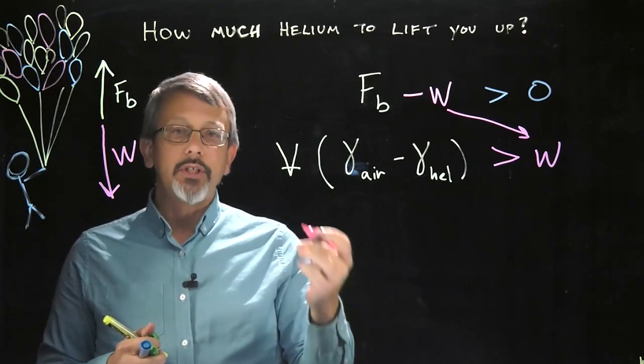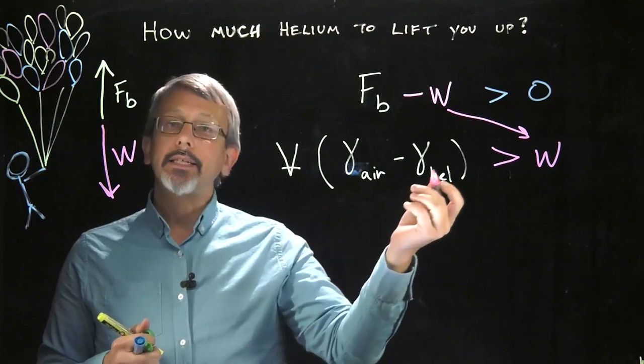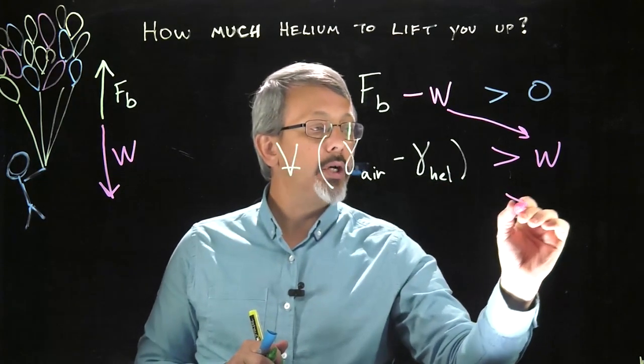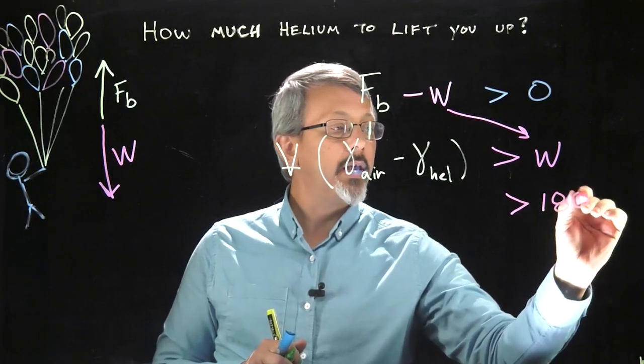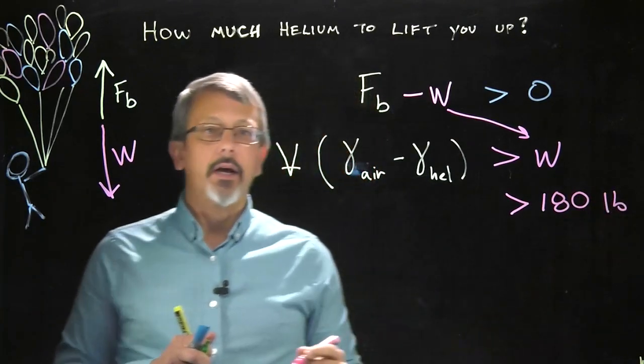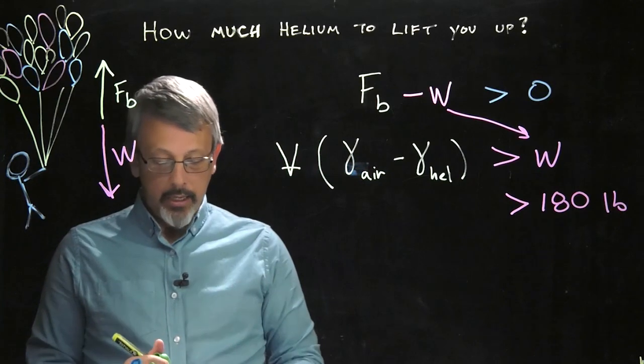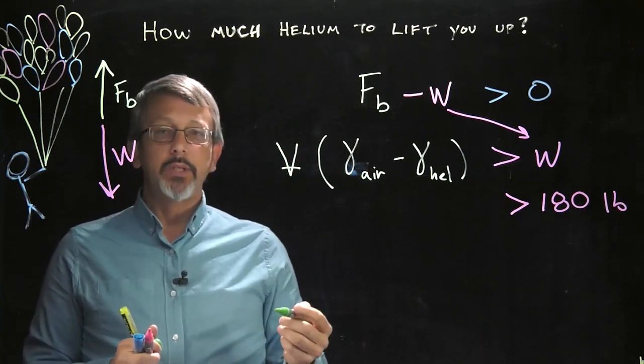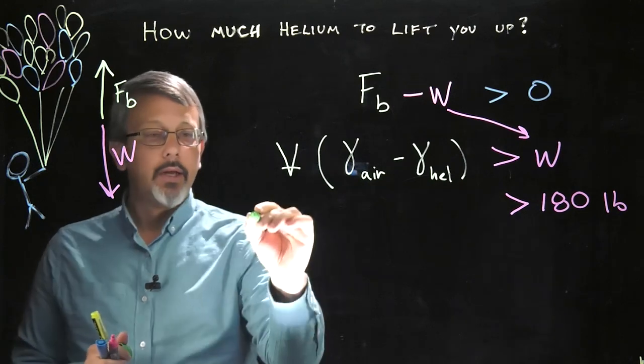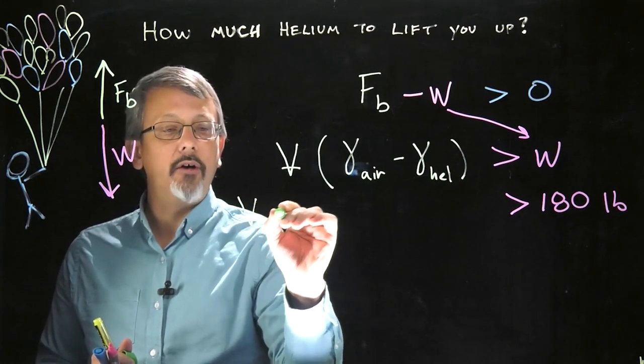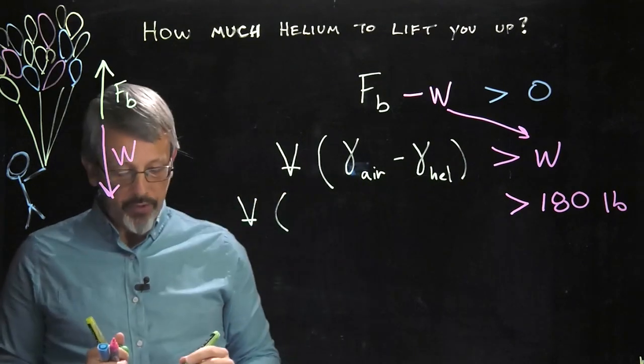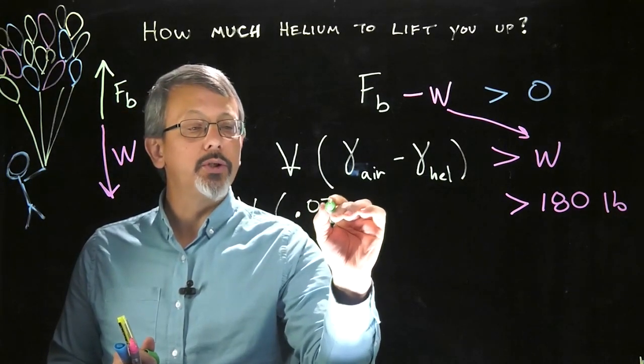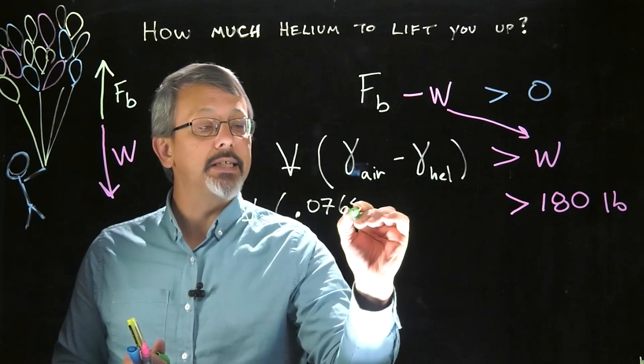So I can look up values for the specific weights, and I can select a value for the weight that I want to lift. I'm going to go ahead and use my own personal weight here, which, depending on the day, is roughly about 180 pounds. Then I can also go ahead and plug in some values for my specific weights of air. The volume is what I'm trying to solve for.